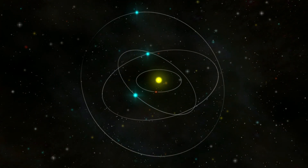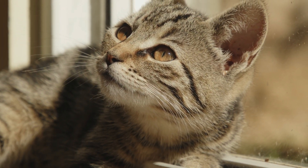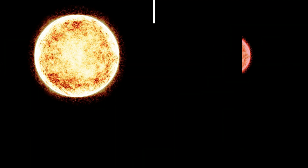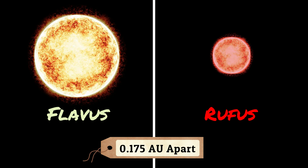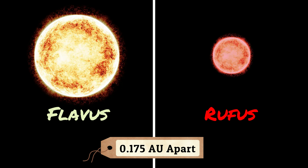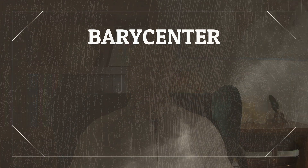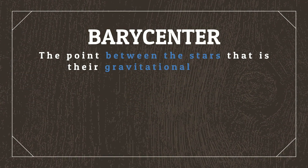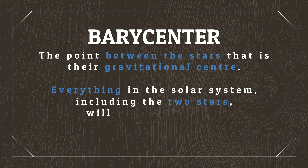Now, you might be asking why any of that is relevant. Well, it's not only going to determine how the stars orbit each other, but also where our planet is going to be able to safely orbit as well. The distance that the planet orbits changes things like how long its year is and how warm the planet is, which play a huge factor in whether or not the planet can support life as we know it. To figure this out, we first need to determine the orbit that the stars have around each other. Let's set them at an average distance of 0.175 AU apart, with 1 AU being the distance Earth is to our real-life Sun. We can work out the distance each star is from the barycenter — the point between the stars that is their gravitational centre — and everything in the solar system, including the two stars, will orbit this point.